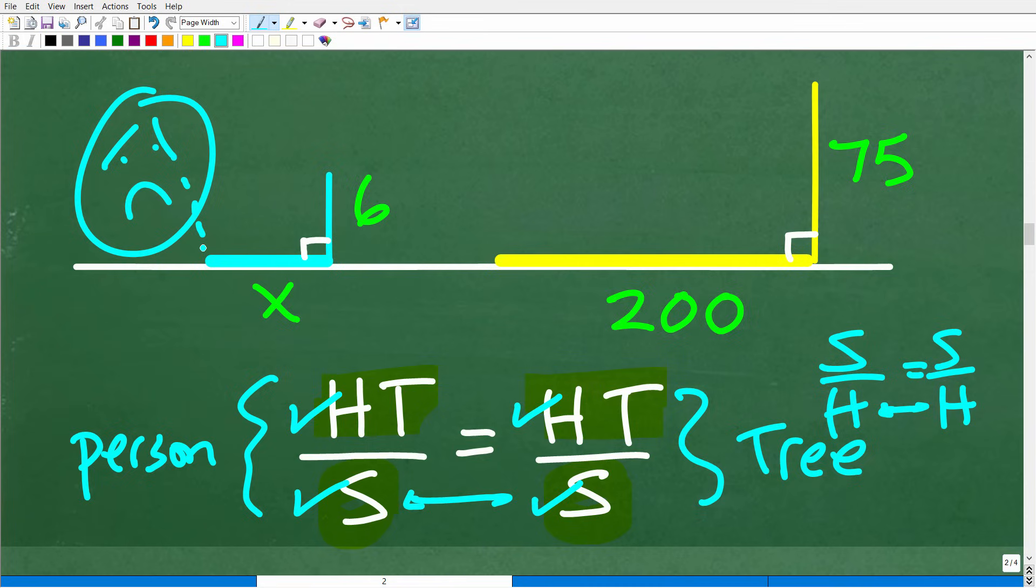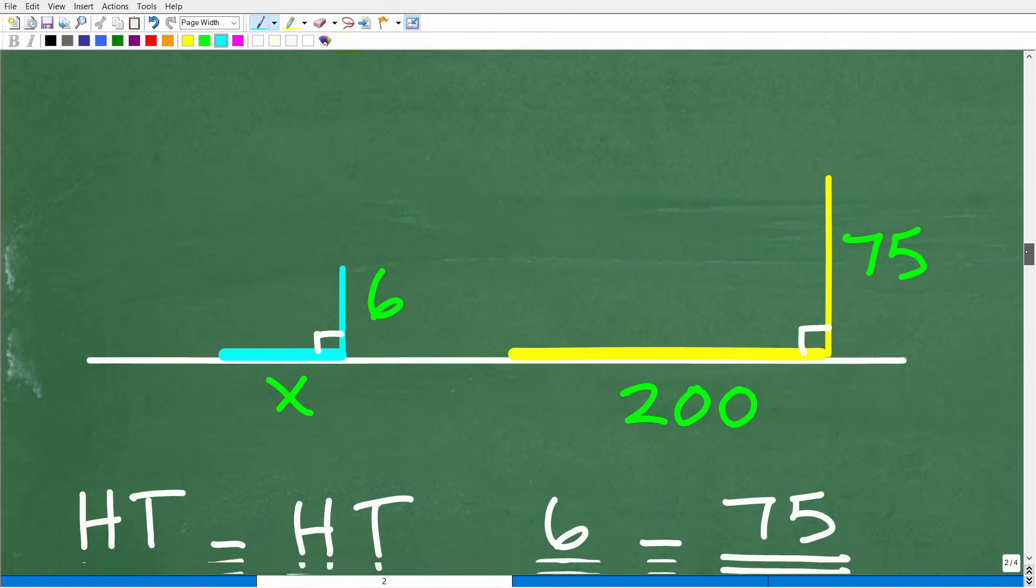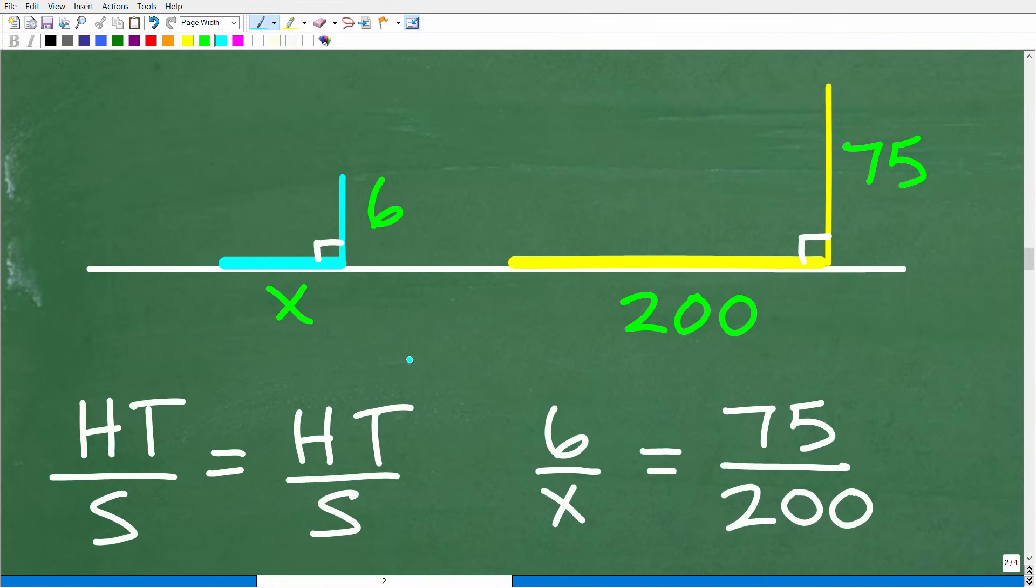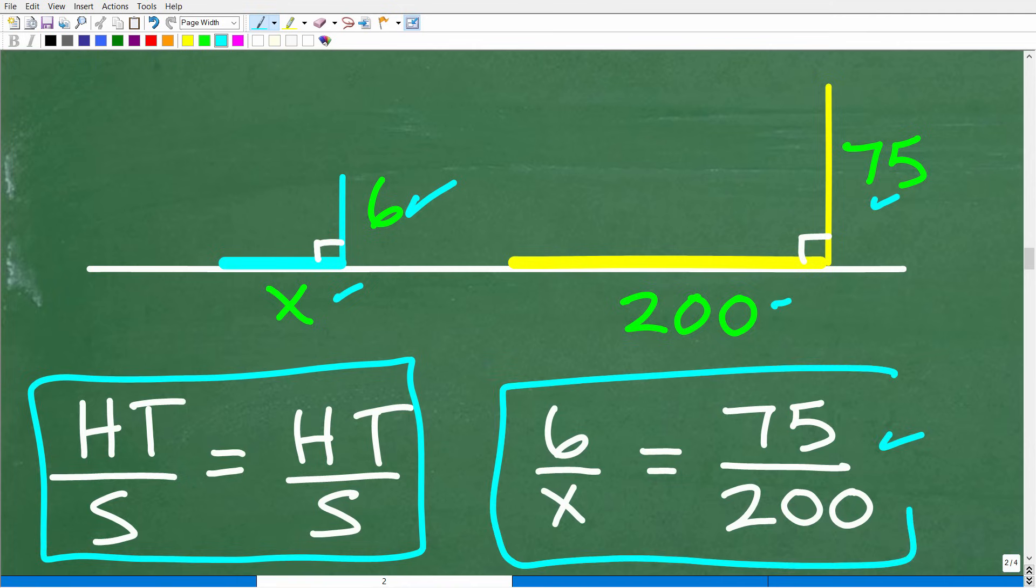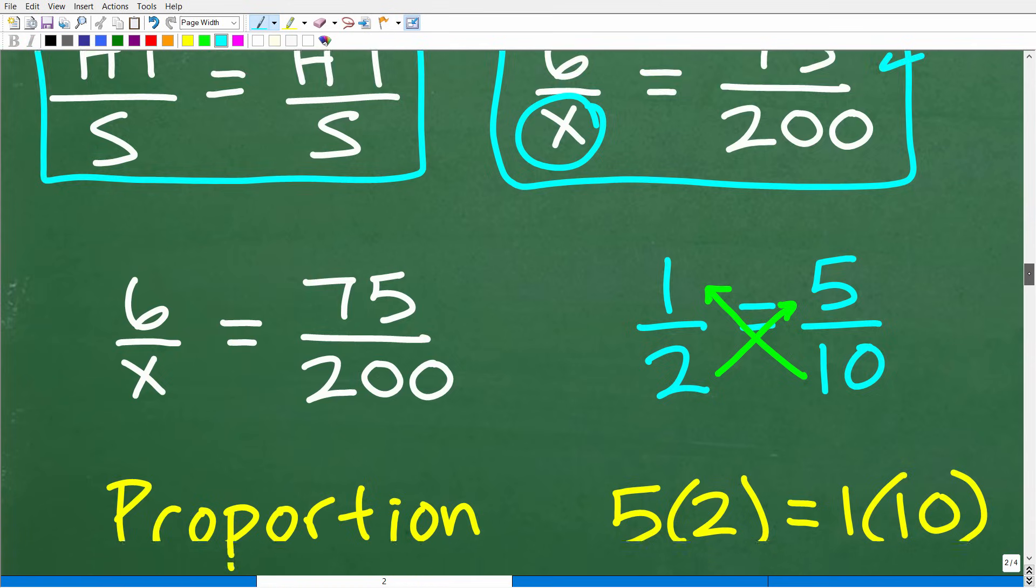So if you understand everything I'm saying here, then let's see if you can set up this proportion. And if you can set up this proportion, solving it is not that difficult. All right. So here we go. So we're going to set up this proportion. We're going to compare the height and shadow of the person, the person to their shadow, to the tree to its shadow. And when we do that, we have six over X. And that's going to be equal to 75 over 200. All right. So this is the proportion that we need to solve. And when we solve for X, we will have solved the problem.